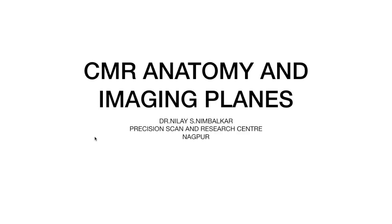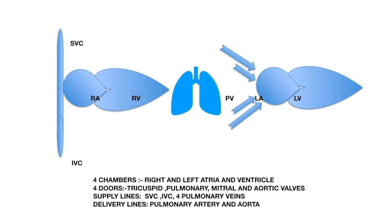Today we will be talking about CMR anatomy and imaging planes. The heart is a complex structure similar to a two-room apartment with a common wall in the form of the inter-atrial septum and interventricular septum, with four automatic doors operated by pressure gradients, veins as supply lines, and arteries as delivery lines. It does not follow normal orthogonal planes of the body — axial, sagittal, coronal — but follows its own axis and contraction pattern, so we will follow the same mixed approach.